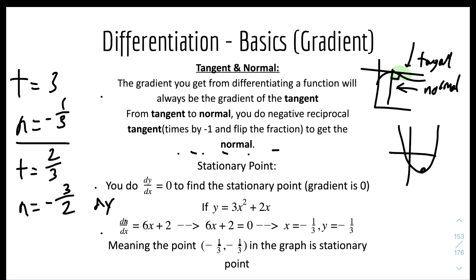Set dy over dx plus 2 equals 0, solve for x and y. The resulting point on the graph is the stationary point, which is a maximum or minimum point.